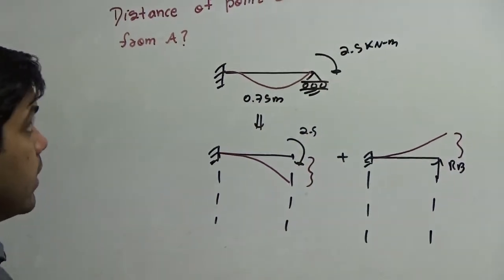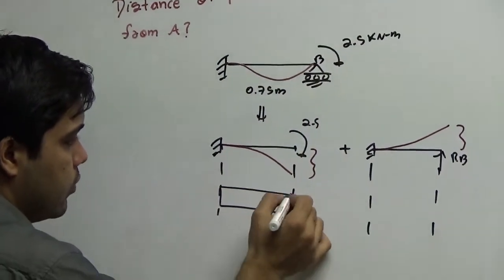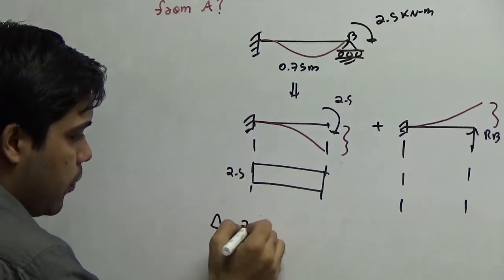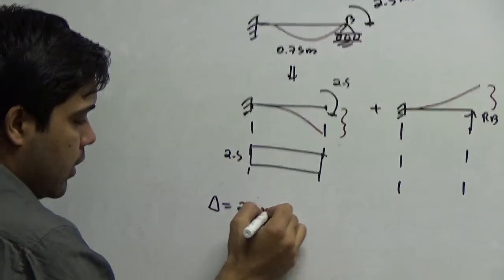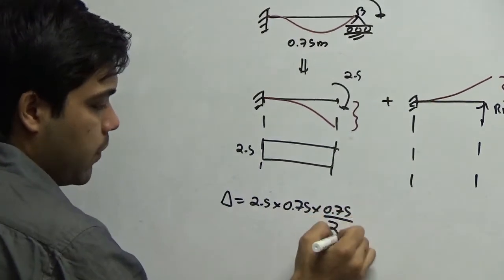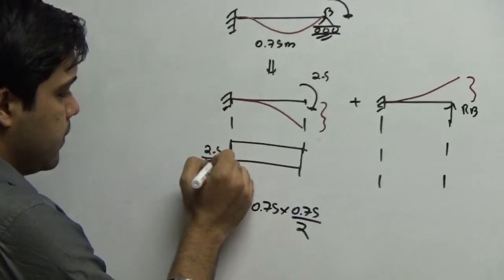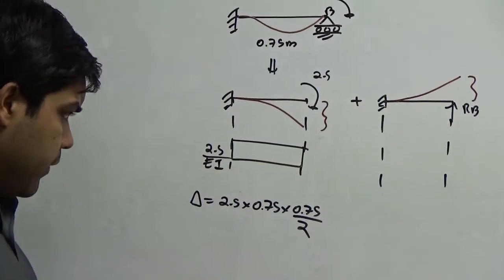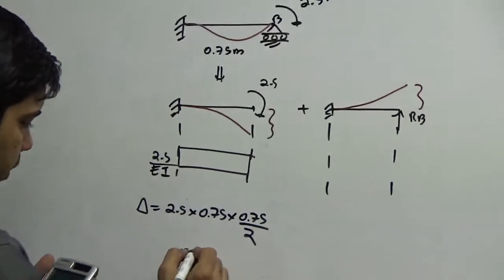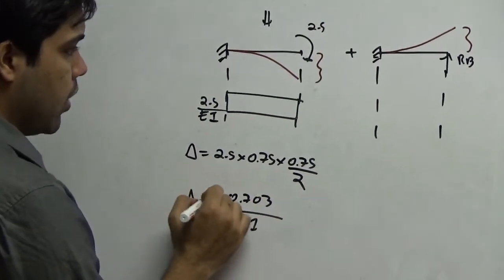There will be zero deflection at end B. I can use the Moment-Area Theorem easily here. This value is 2.5, so the deflection is 2.5 into 0.75 into 0.75 by 2.